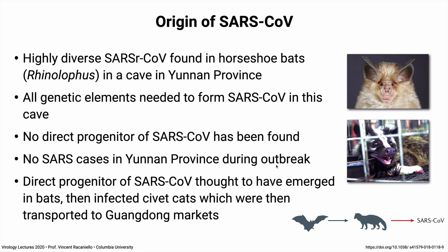The hypothesis emerged that the SARS progenitor arose in bats by mutation and recombination, and bats then infected civet cats sold in the market. Civet cats were found to be positive for a virus virtually identical to that which infects humans. The civet cats were thought to be infected in the countryside by bats, brought to the market, and then meat handlers were infected by the civet cats, starting the outbreak. The scenario is: horseshoe bat → civet cat → SARS-CoV.